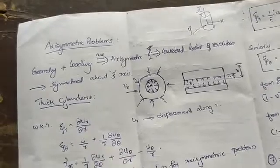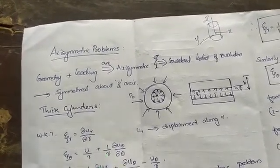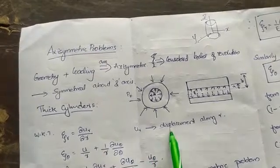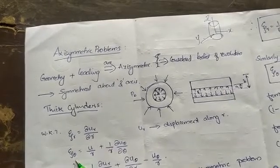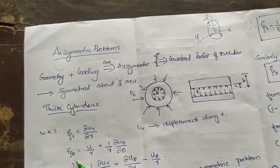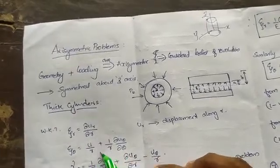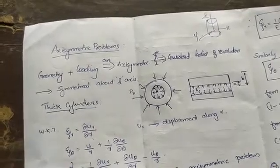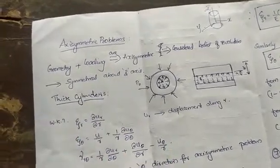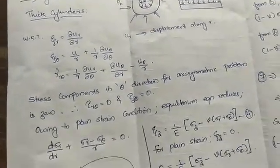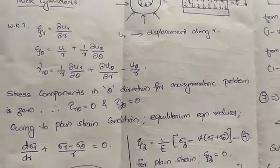Recalling the strain equations: radial strain is dU_R/dR, where U_R is the radial displacement. Similarly, strain in the theta direction is U/R. For an axisymmetric problem, the condition in the theta direction is zero, since the cylinder is axisymmetric — not a revolution in that sense — so tau_r_theta and tau_z_theta are both zero.